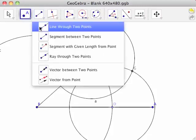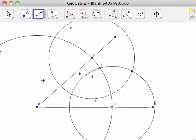Finally, select the ray through two points tool from the line toolbar. Click first on point B and then on point G. This creates half line B. Half line B bisects angle B.